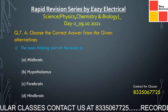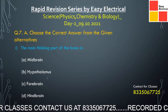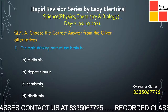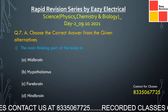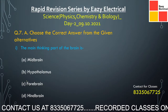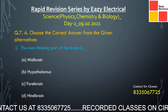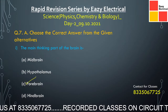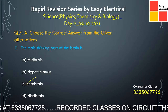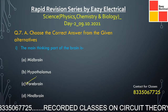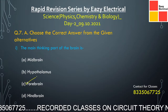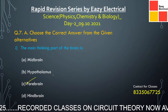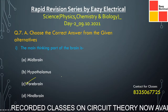Next question: the main thinking part of the brain is — midbrain, hypothalamus, forebrain, or hindbrain? The correct option is forebrain. In the forebrain, the cerebrum is located, which is the major part responsible for our thinking power.